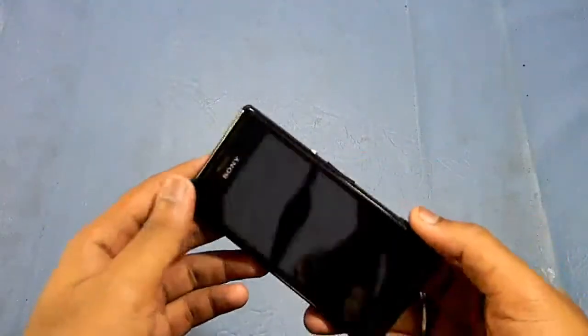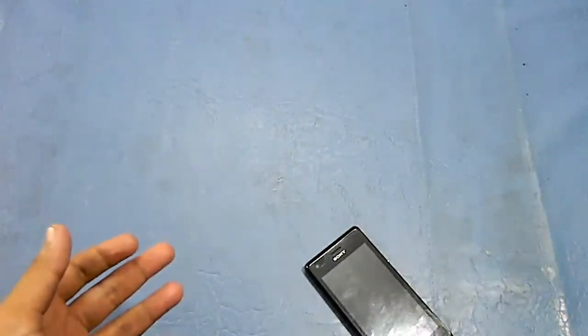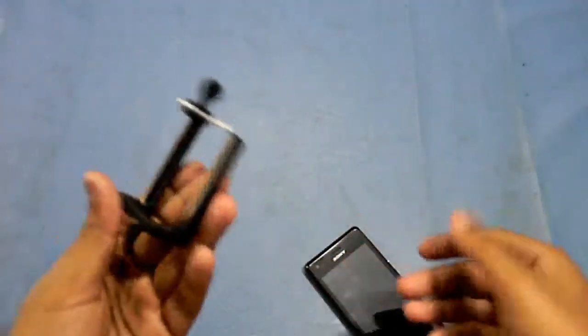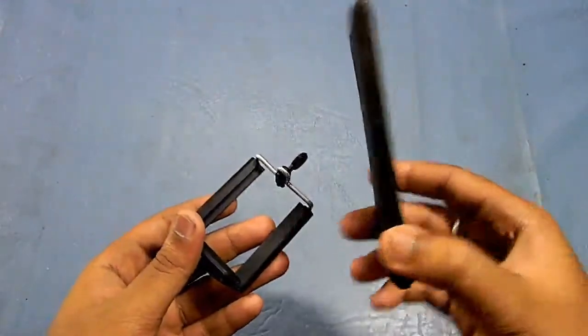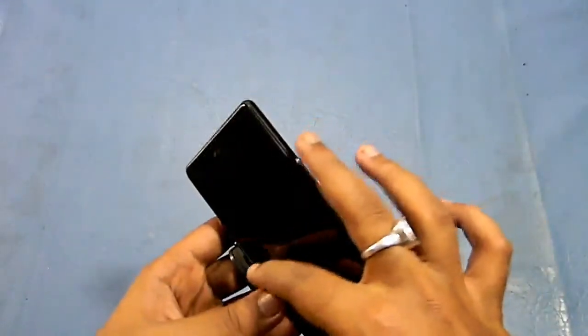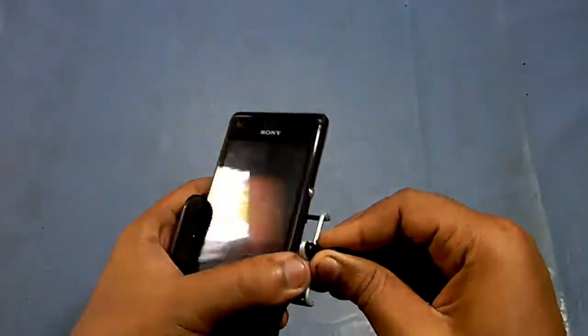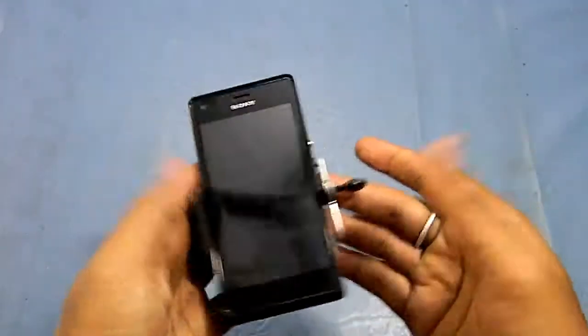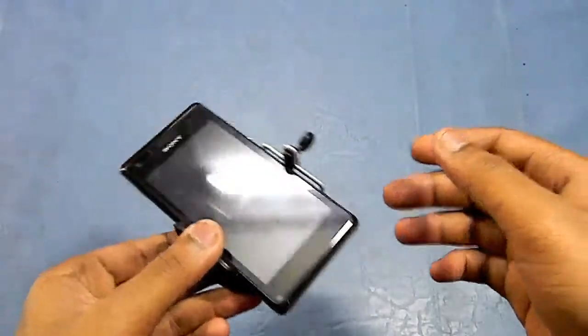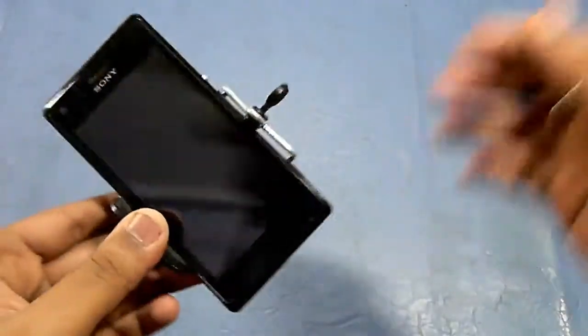Now here I have my Sony Xperia M smartphone. Let me mount it with this clip. For mounting, just rest your phone like this on the bottom of the clip, pull this handle, insert it, and release it. Now you can see it has been mounted and it's not even going to fall. Good grip.